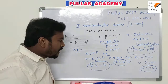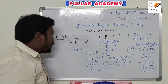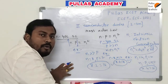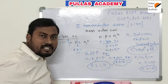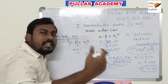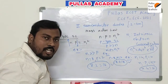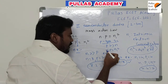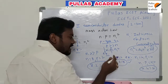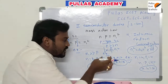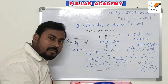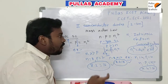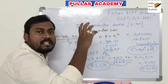In N-type semiconductor, when you increase the electron concentration, hole concentration is decreased by the same amount such that this product remains constant always. Similarly in P-type semiconductor, hole concentration is increased, but electron concentration is decreased to the same amount. So when electron concentration decreases and hole concentration increases, this product remains constant always. For any semiconductor at a given temperature, the product of electron concentration and hole concentration remains constant.